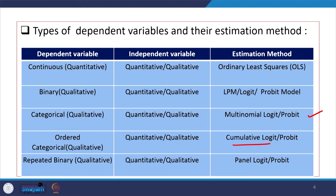If your dependent variable is binary but repeated binary — that is, your responses are repeated — then panel logit or probit is applied, since data is longitudinal or repeated in nature, irrespective of the kind of independent variable.